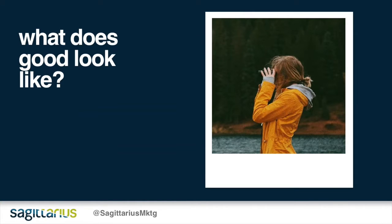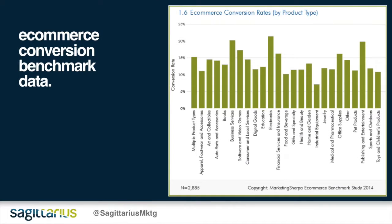Looking at what good CRO looks like: we can look at benchmark data online, but we recommend that the best benchmarks are based on your own data — what is the standard conversion, what worked well and what didn't. What you class as a conversion may not be the same as other brands. There are some examples of e-commerce conversion benchmark data available online, mainly for product categories. For example, niche product groups like electronics and computer software have a higher conversion rate.